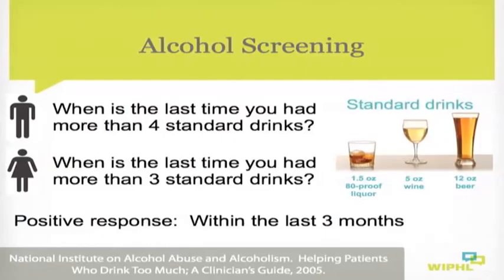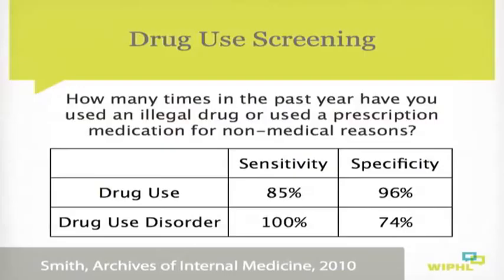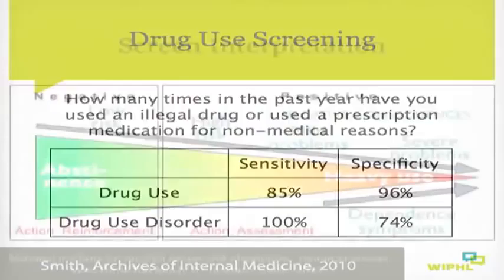We start with a simple alcohol screening question. For men, we ask: when is the last time you had more than four standard drinks? For women: three standard drinks. Any response within the last three months is considered a positive screen. For drug use, a single item screen is recommended: how many times in the past year have you used an illegal drug or used a prescription medication for non-medical reasons? This question is quite sensitive and specific for drug use and related disorders.